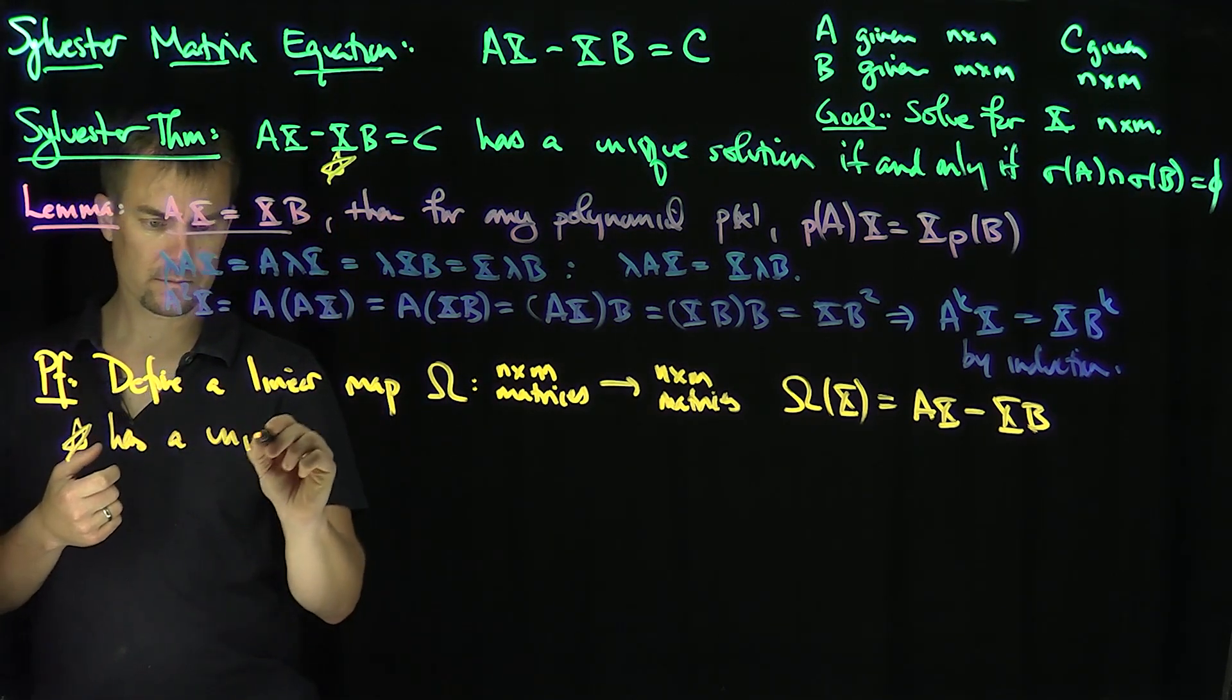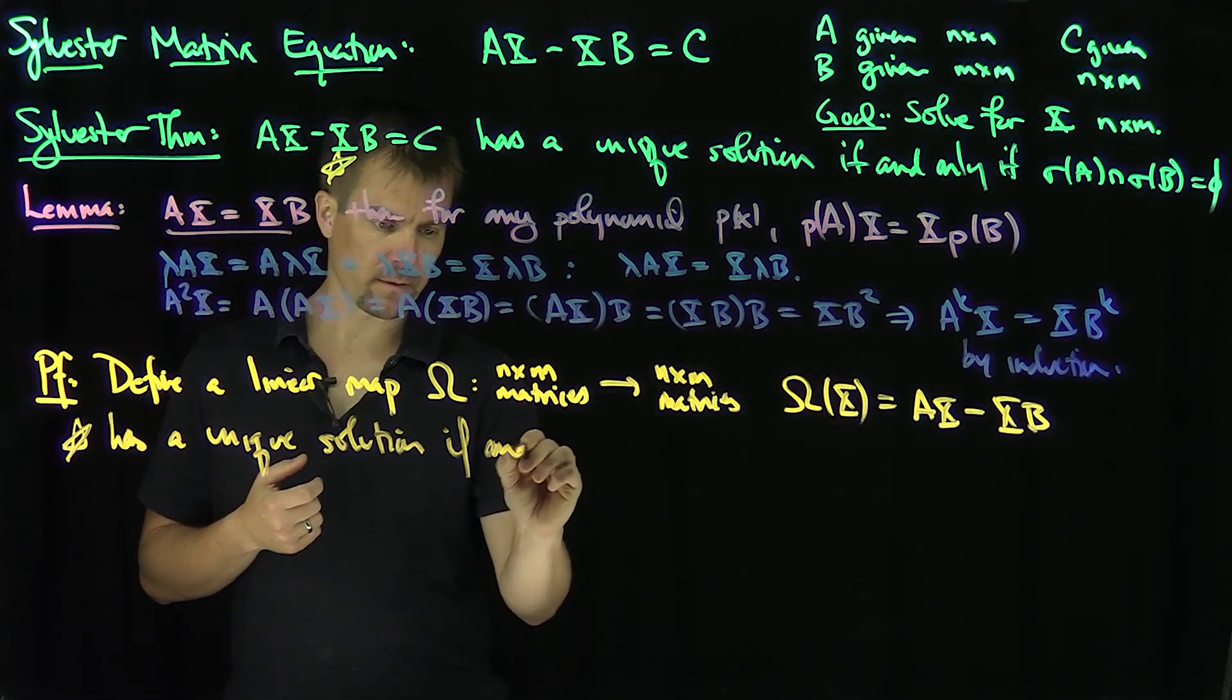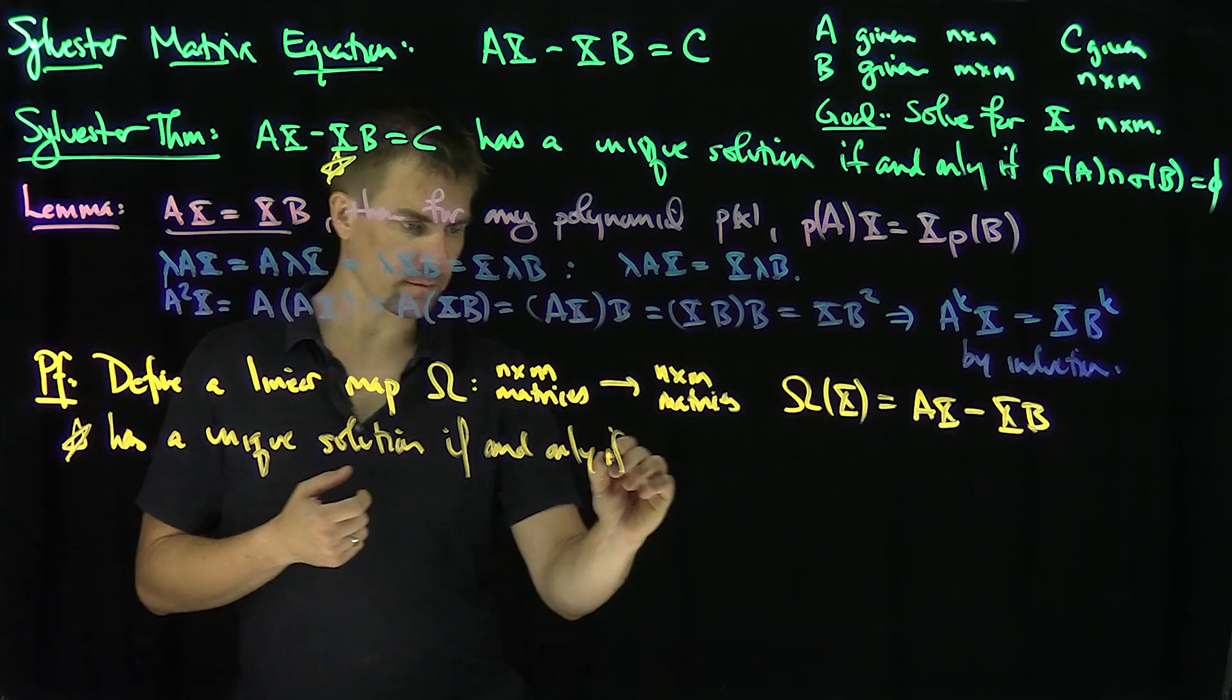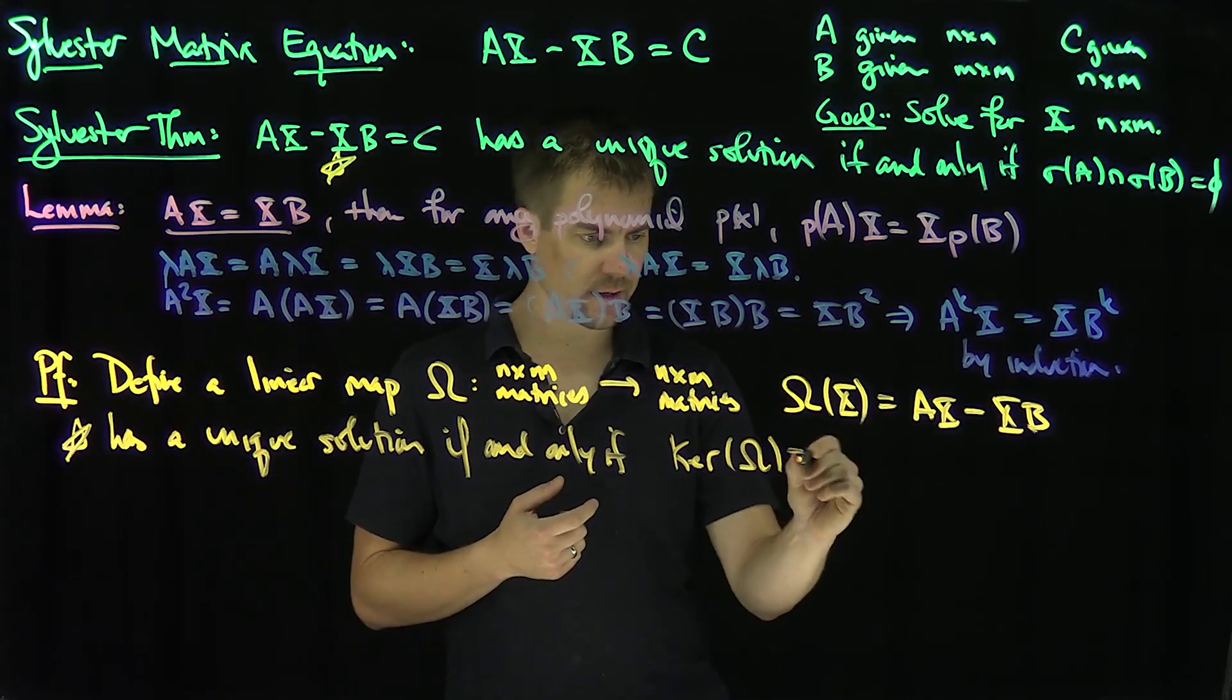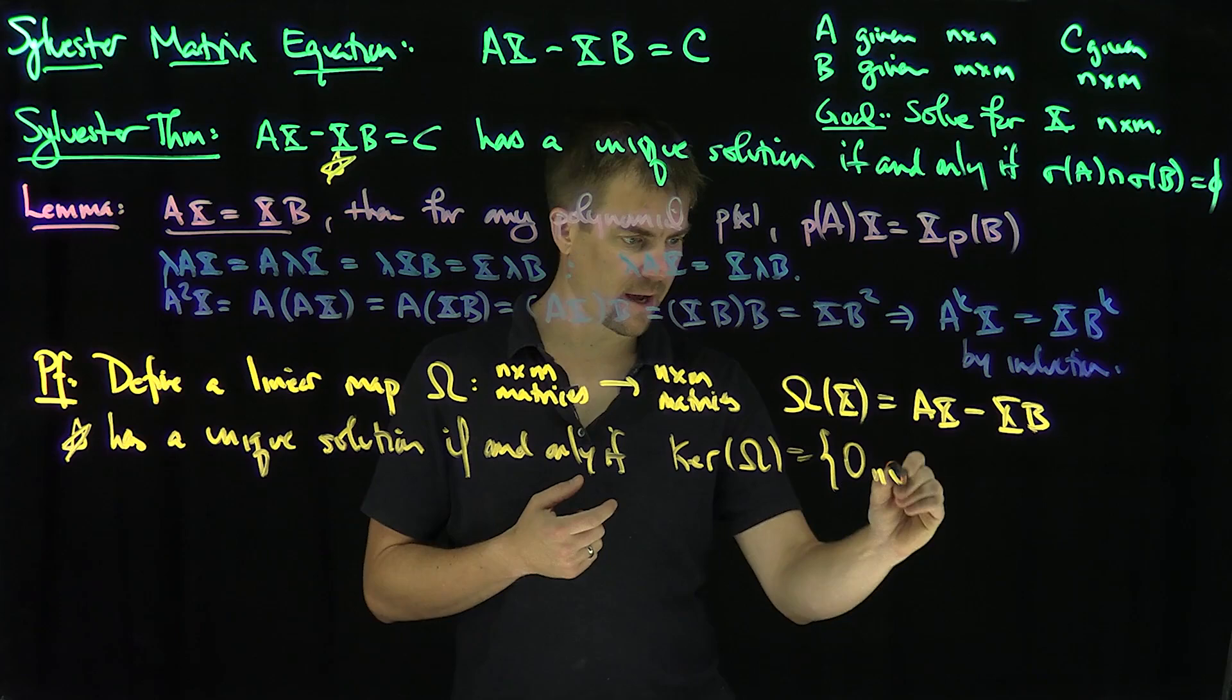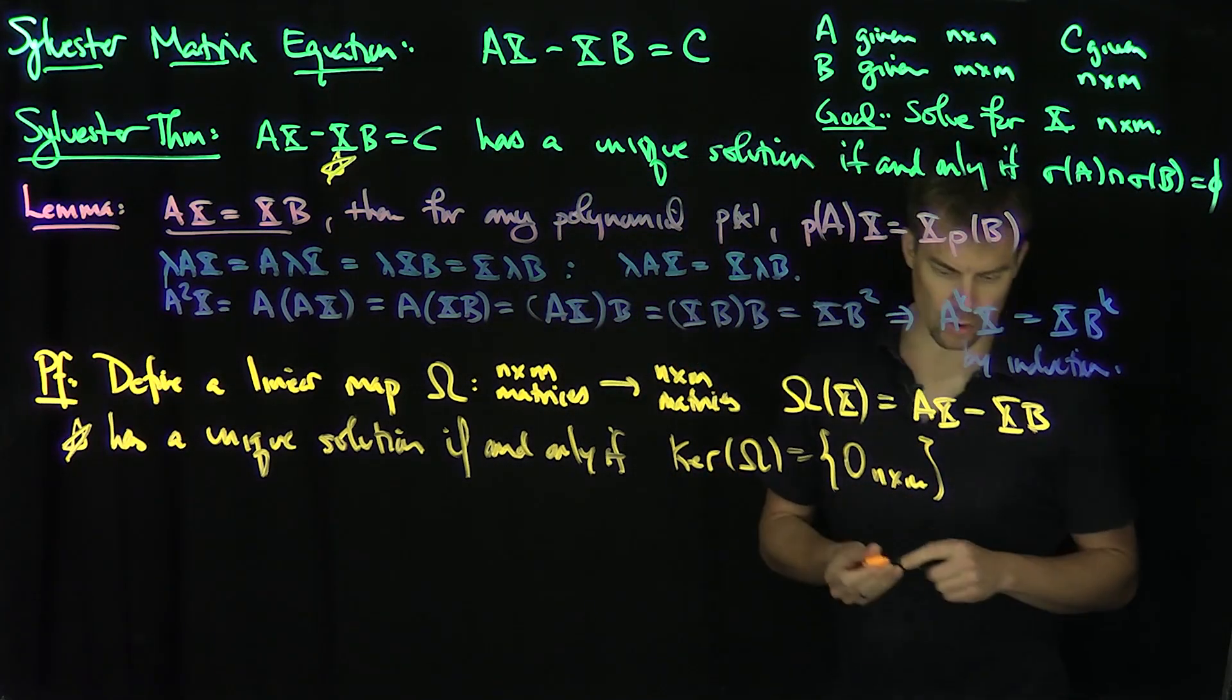if and only if the kernel of omega is trivial. The kernel of omega is trivial means the zero n by m matrix. So let's prove that it has a trivial kernel.